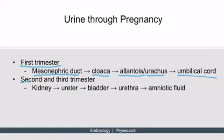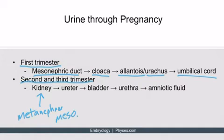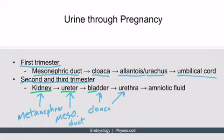During the second and third trimesters, the metanephros forms the kidneys, the mesonephric ducts form the ureters, and the cloaca becomes the bladder as well as the urethra. So urine can travel from the kidney to the ureter, to the bladder, to the urethra — which is what we expect in the adult urinary system. From the urethra, it enters the amniotic fluid.